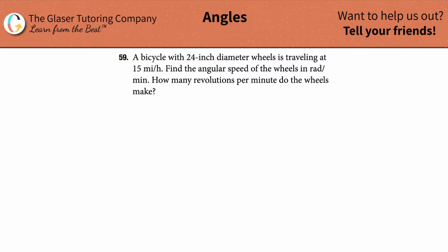Number 59. A bicycle with 24-inch diameter wheels is traveling at 15 miles per hour. Find the angular speed in radians per minute, and then how many revolutions per minute do the wheels make.